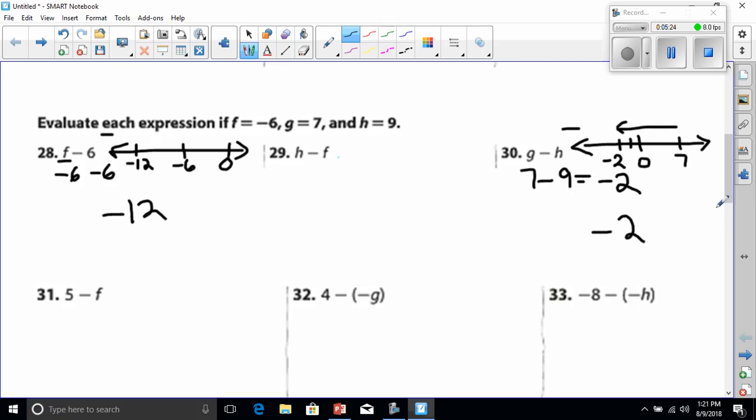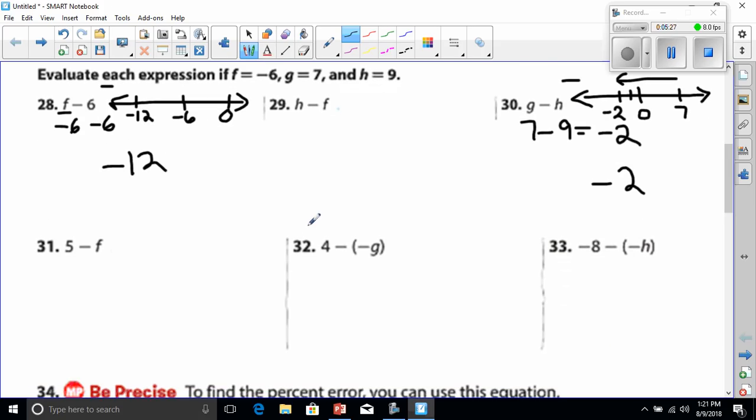Number 32 will be the last one I help you with today. The rest are for you to do. Number 32 says 4 minus negative g. Well 4 stays the same, the minus sign stays there, and negative g - well g is 7, so that's going to be a negative 7. Now we have to remember that we have a negative times a negative which is going to equal positive. So 4 plus 7, and 4 plus 7, well that's 11.